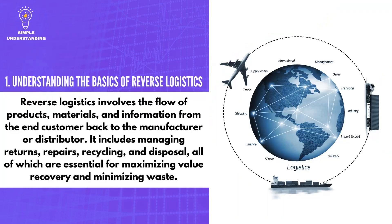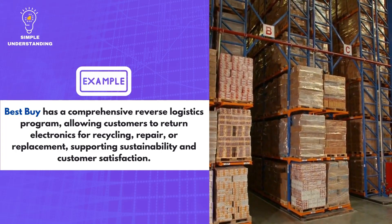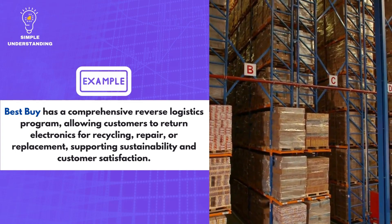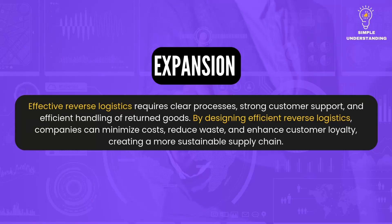1. Understanding the Basics of Reverse Logistics. Reverse logistics involves the flow of products, materials, and information from the end customer back to the manufacturer or distributor. It includes managing returns, repairs, recycling, and disposal, all of which are essential for maximizing value recovery and minimizing waste. Best Buy has a comprehensive reverse logistics program allowing customers to return electronics for recycling, repair, or replacement, supporting sustainability and customer satisfaction. Effective reverse logistics requires clear processes, strong customer support, and efficient handling of returned goods.